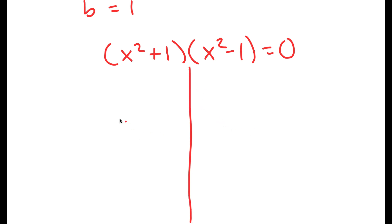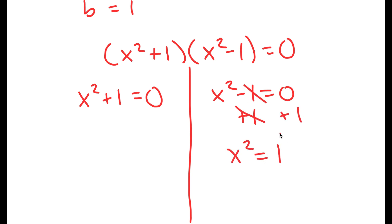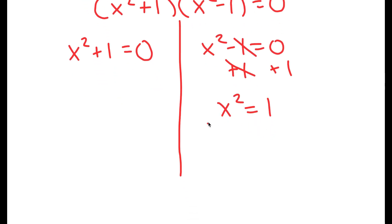Now this gives me two equations: x squared plus 1 is equal to 0, and x squared minus 1 equals 0. Let's first solve x squared minus 1 equals 0, because it's simpler. To solve this, I'm going to first add 1 on both sides, so I get x squared is equal to 1. Now I'm going to take the square root on both sides — the square root of x squared is x — and I get x equals positive or negative 1.